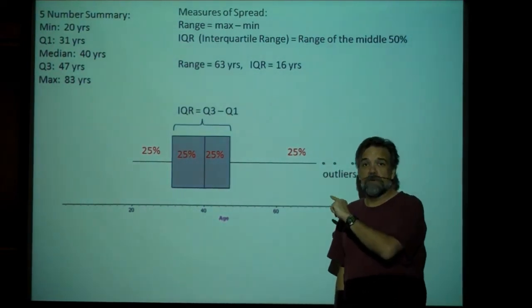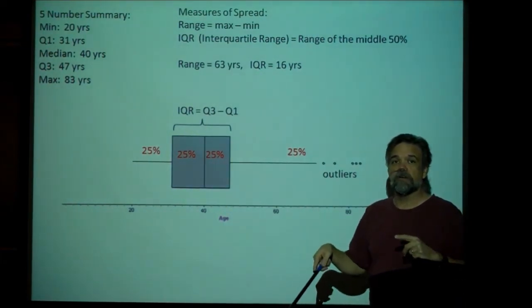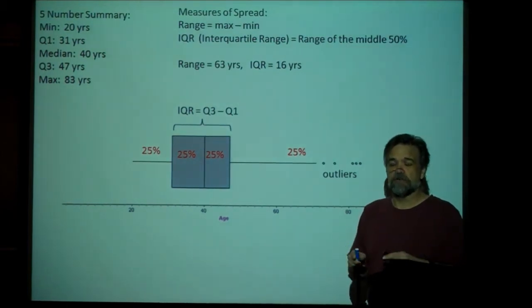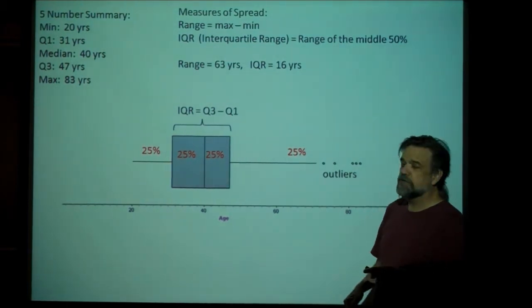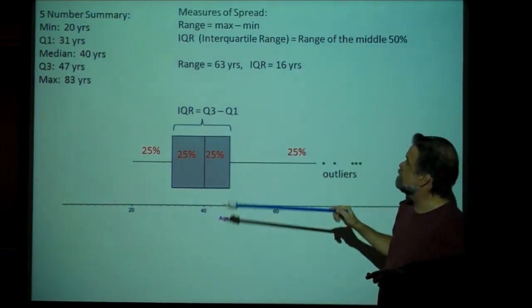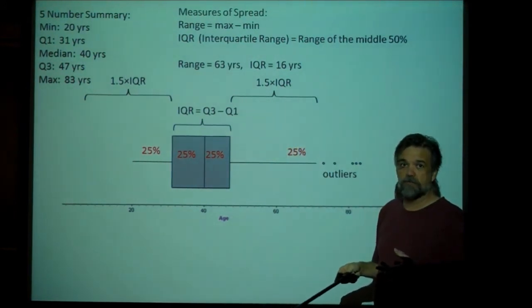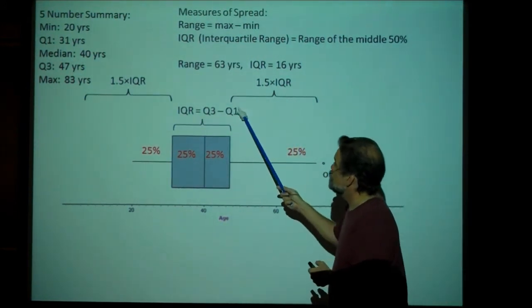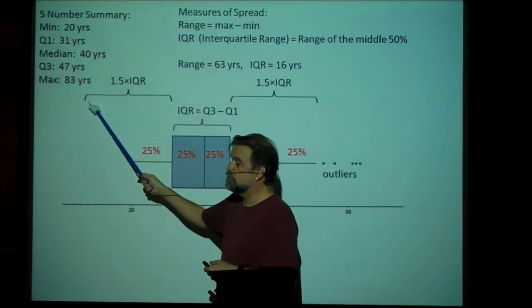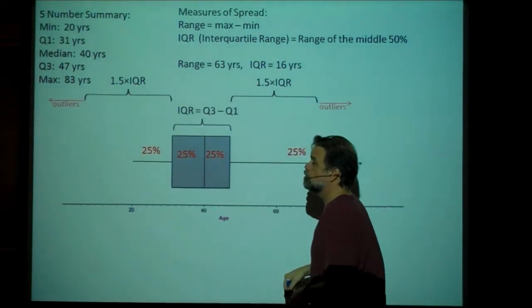The reason I wanted to talk about that first is because we actually use the IQR to figure out what we consider an outlier and what we don't consider an outlier. It's kind of a strange calculation, but bear with me. So what you do? You take your IQR, in this case, 16. You multiply it by 1.5. So in this case, that would be 24. You add that 24 to Q3, and you subtract it from Q1. Anything outside of that, we consider an outlier.